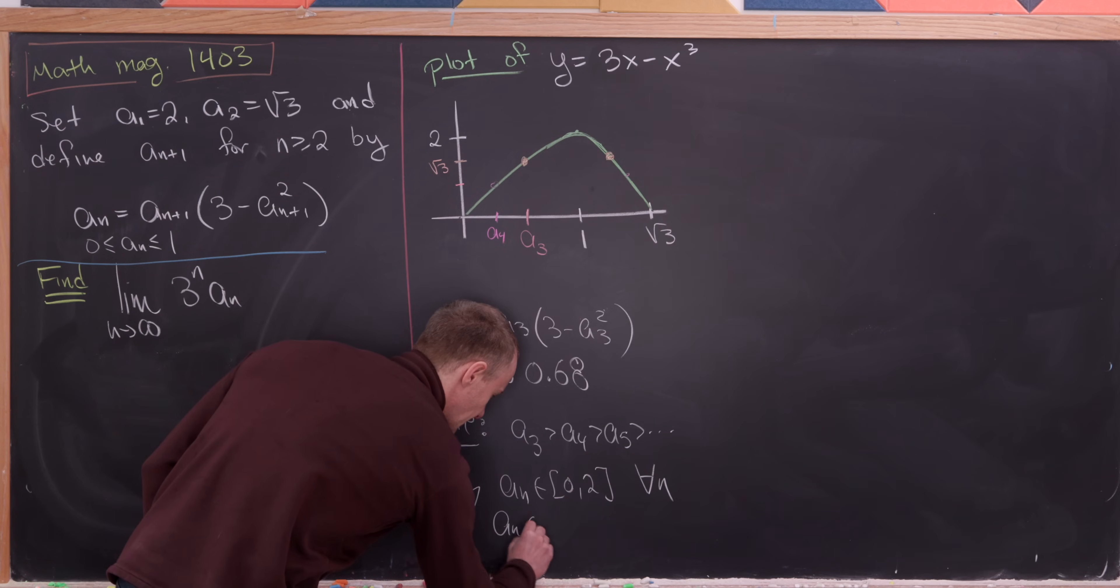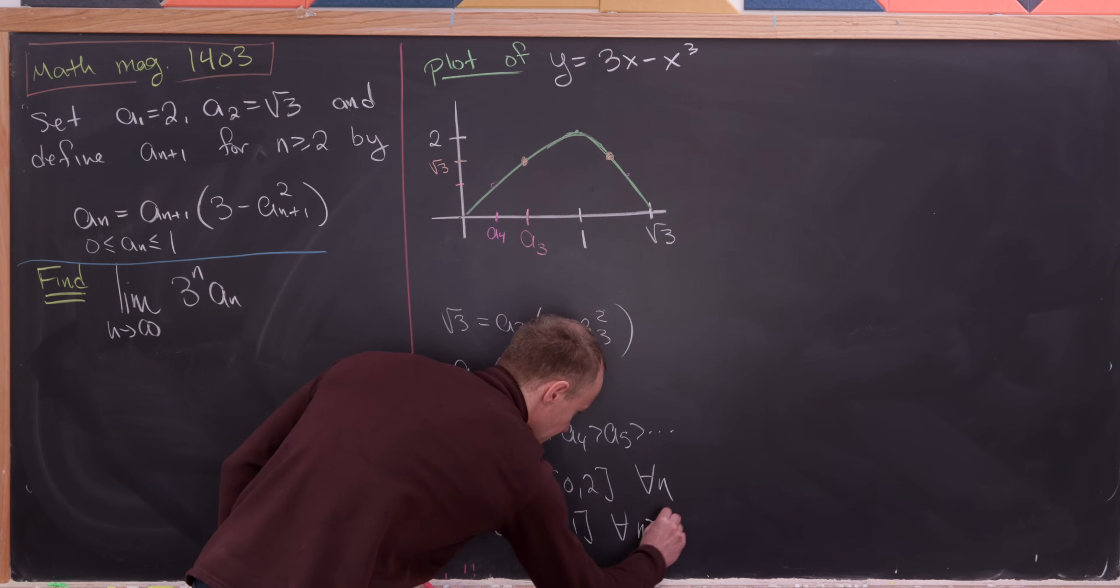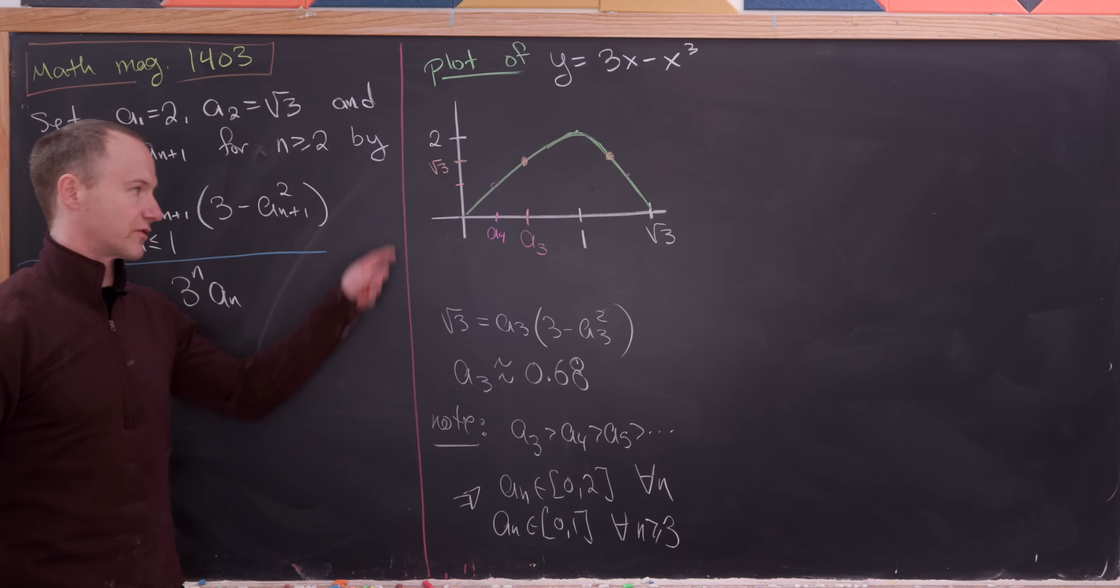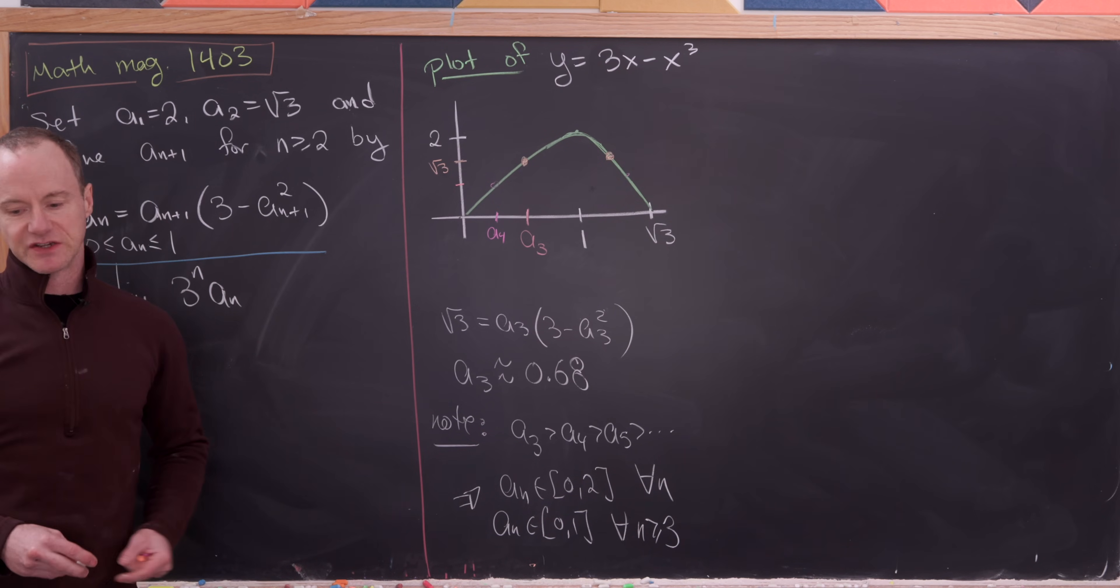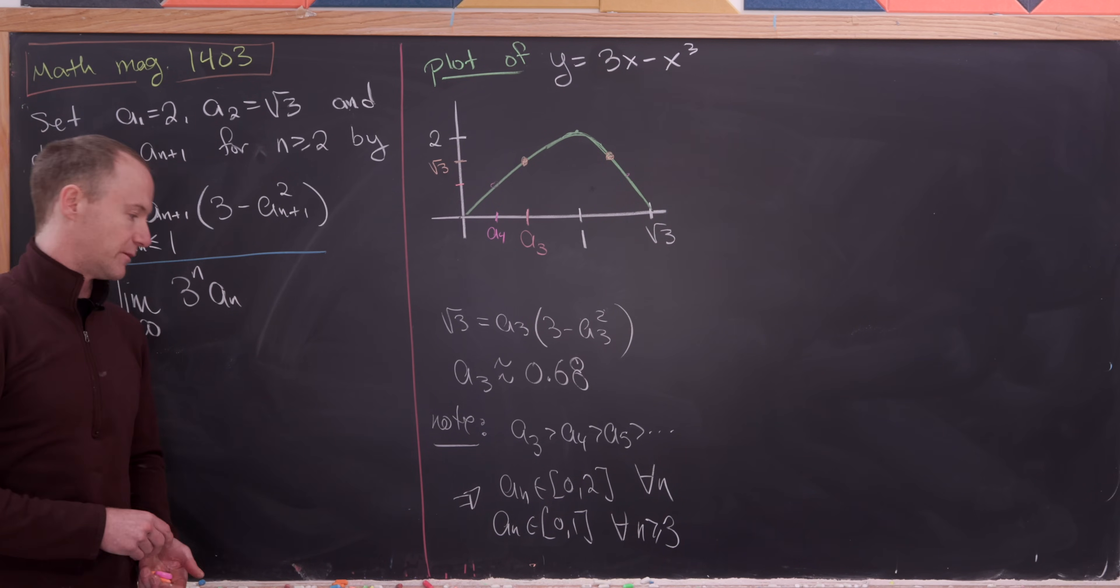And then a sub n is on the interval from 0 to 1 for all n bigger than or equal to 3. By this observation that we've made over here with the plot.